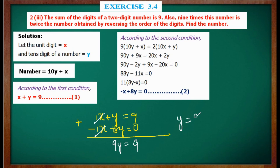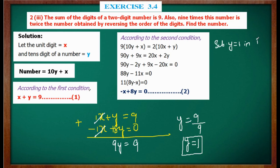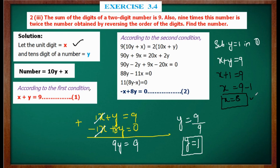Adding: x and -x cancel; y + 8y = 9y; 9 + 0 = 9. So 9y = 9, y = 1. Substituting y = 1 into the first equation: x + 1 = 9, so x = 8. The unit digit is 8 and tens digit is 1, therefore the required number is 18.